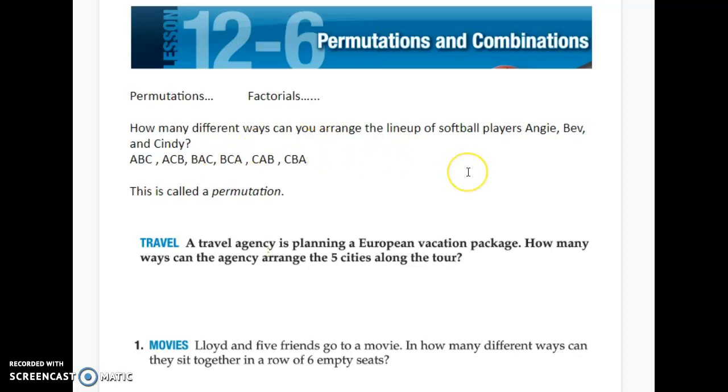Can you think of any other ways we can arrange this? I think that's it. So how many different arrangements did we get? Looks like six ways. This is what we call a permutation. When objects or people are arranged so that order is important, each possible arrangement is called a permutation.